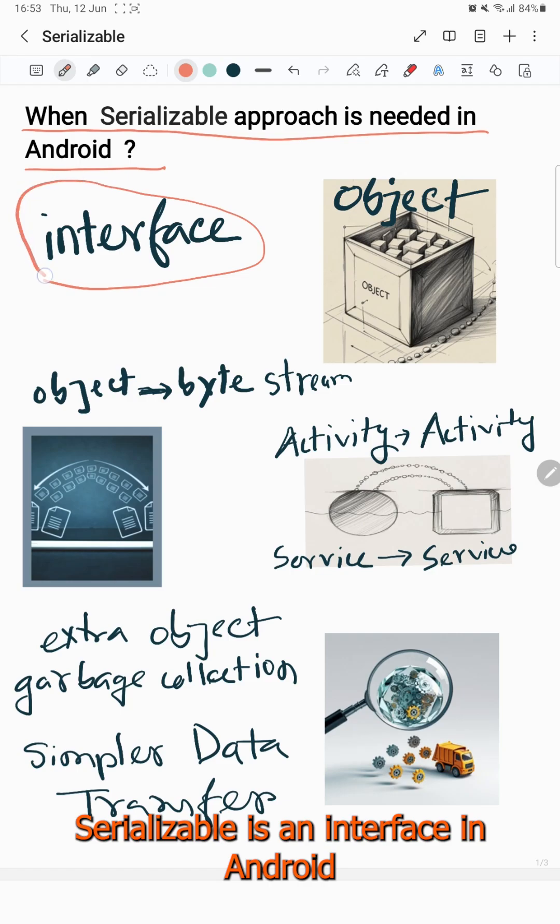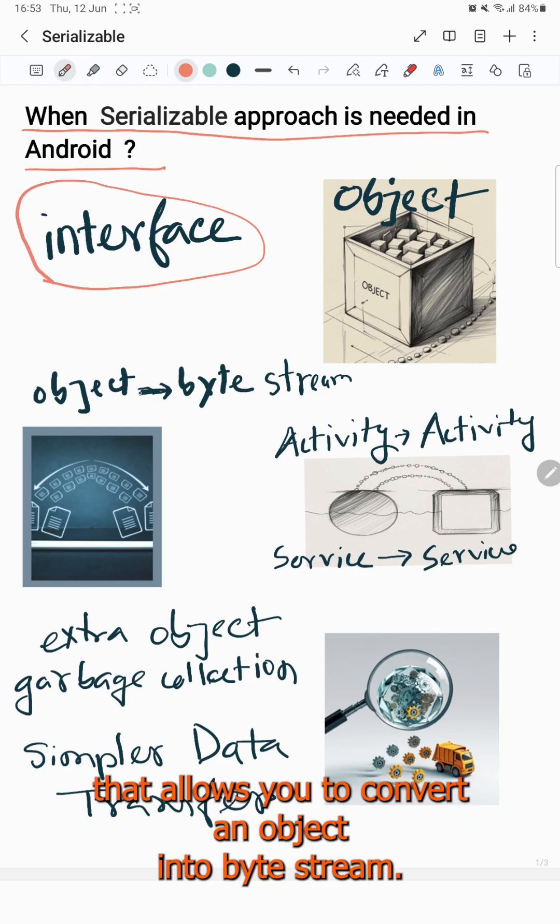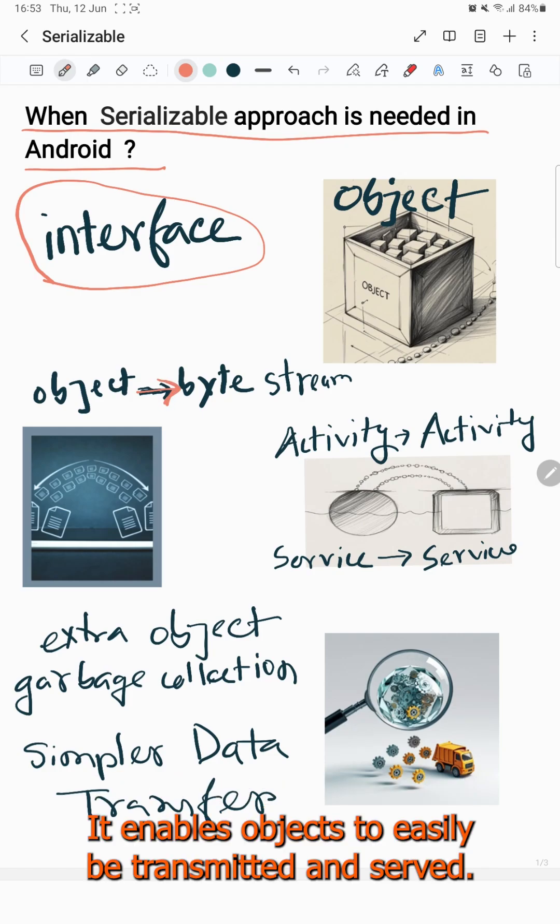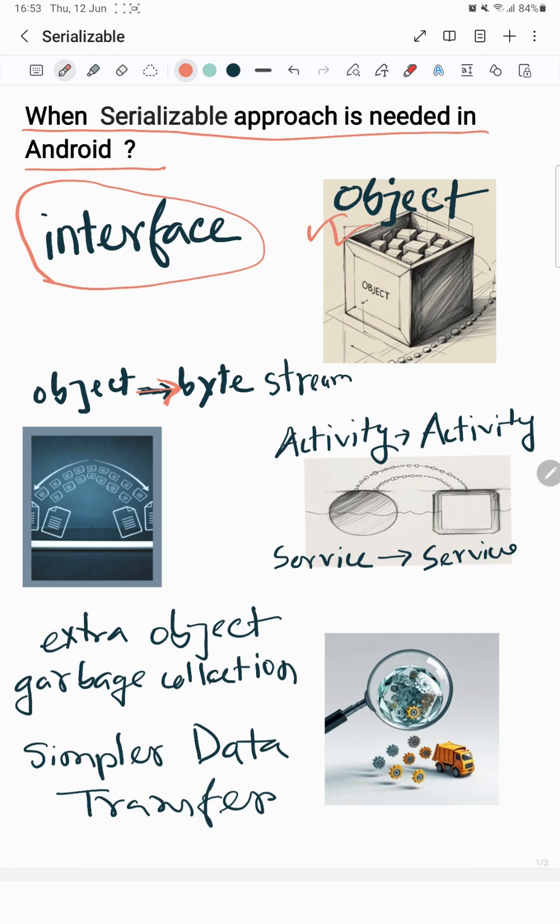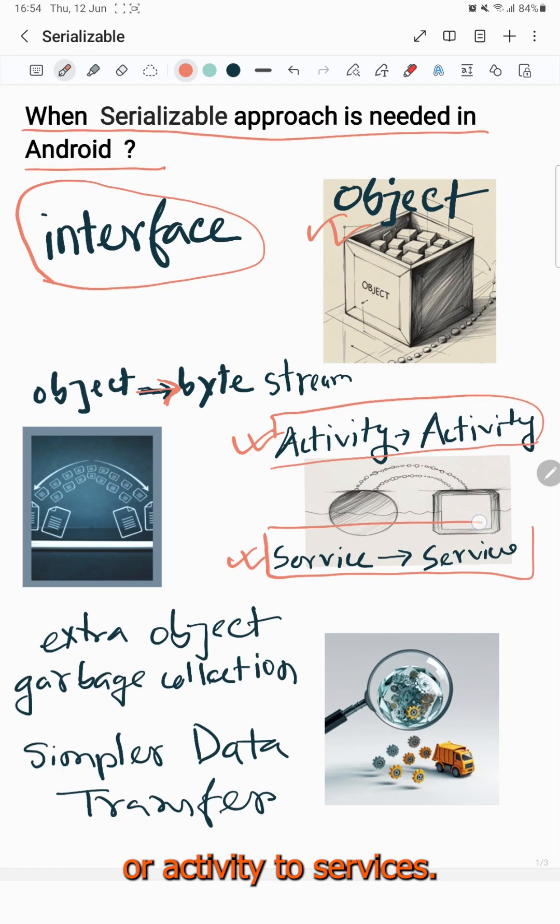Serializable is an interface in Android that allows us to convert an object into a byte stream. It enables objects to be easily transmitted and saved. By implementing Serializable, you will be able to transfer packaged data between activities and services.